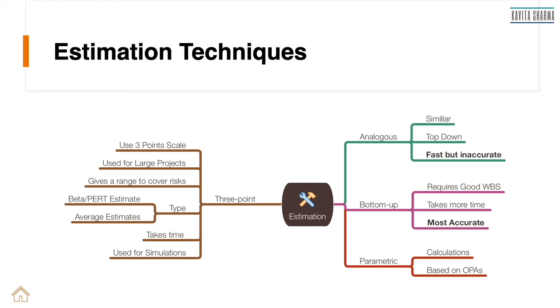Summarizing. There are 4 types of estimates. The first one is analogous. This one is most inaccurate. The second one is bottom up which is extreme opposite of analogous. It is most accurate. Parametric uses calculation. Only when we have good OPAs or good baseline data. All of the estimation techniques uses certain baseline data or OPAs. But for parametric, it becomes really, really important. Three point estimates uses three point scale. And then there are expected duration or expected cost. There are 2 ways to arrive at it. Beta or average. That's it. Let's do it. Let's play.